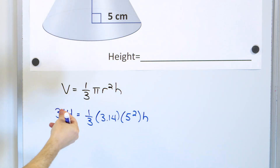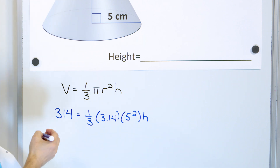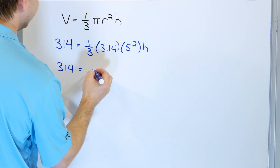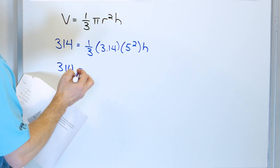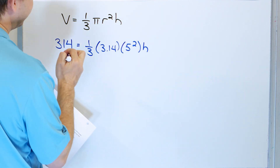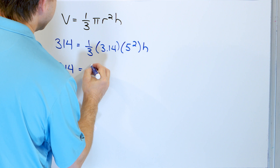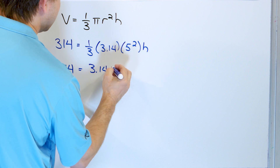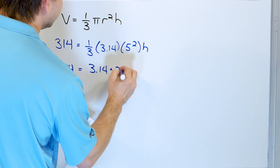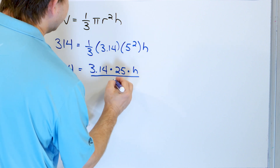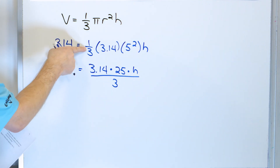but we're going to use the variable h because we know that's the height. So 314 is going to be equal to 3.14, and then we have 5 squared — 5 times 5, which is 25 — multiplied by 25. And then we're going to multiply by h, and write the 3 on the bottom. So we're multiplying by a third.